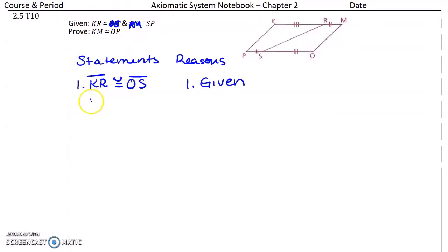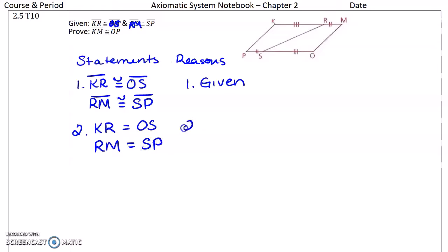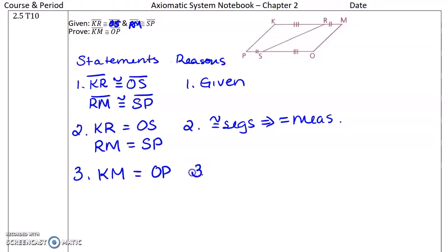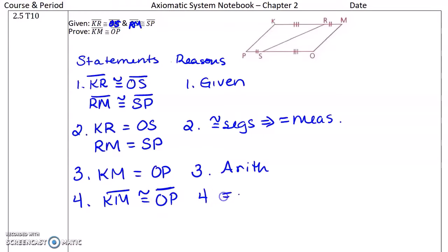I can go ahead and say RM is congruent to SP right away. Then the measure of KR equals the measure of OS, and the measure of RM equals the measure of SP — congruent segments implies equal measure. So now I can combine those measures: KM is equal to OP. That's just arithmetic — addition. And then segment KM is congruent to segment OP.